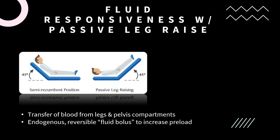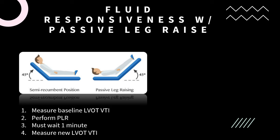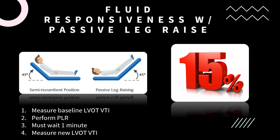If you really want to be advanced, you can pair the LVOT VTI with the passive leg raise. The passive leg raise acts as a reversible and short-lived volume challenge due to the transfer of blood from the legs and pelvis compartments, making it safe in nearly all patients. You can therefore perform the passive leg raise instead of an actual IV fluid bolus challenge. Have the patient in a semi-recumbent position, measure the baseline LVOT VTI, perform the passive leg raise, wait one minute, and measure a new LVOT VTI. If it increases by 15%, the patient is fluid responsive.